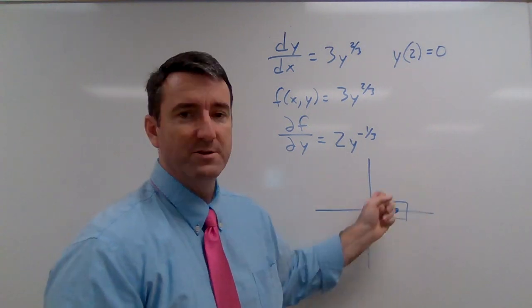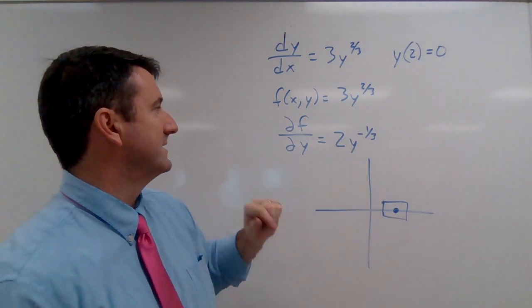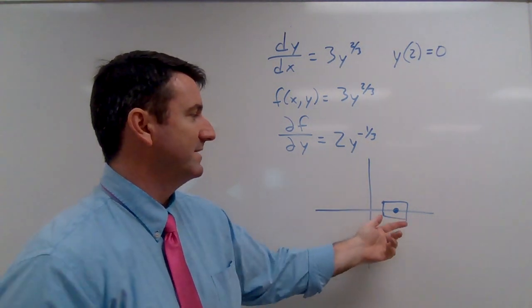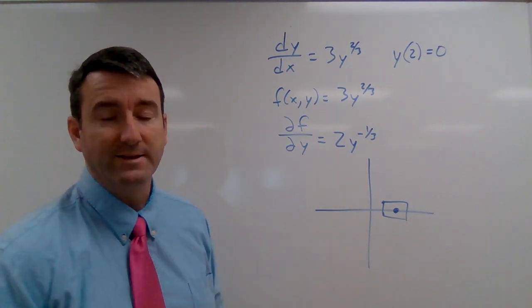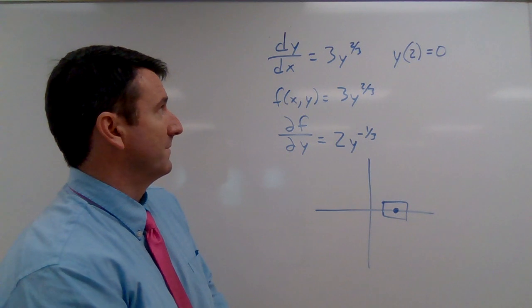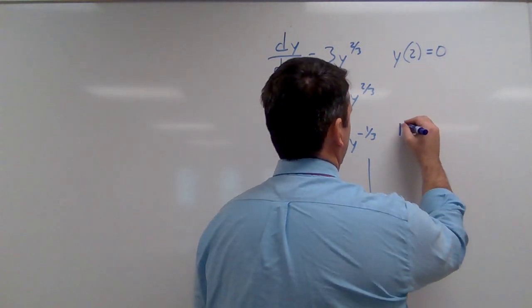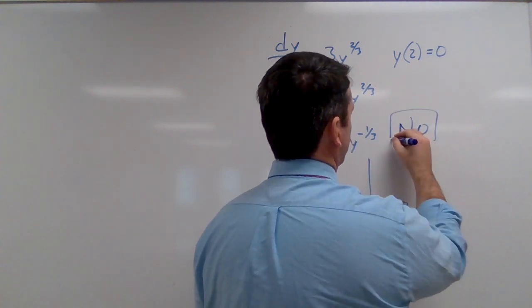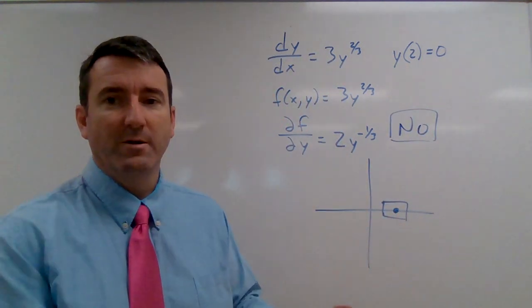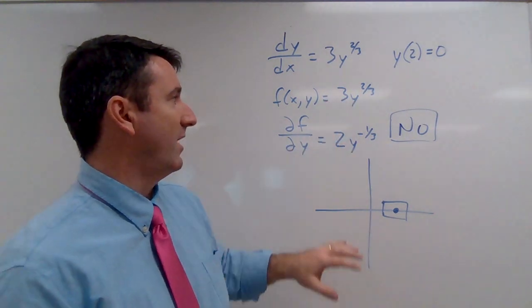So there's no way that we can draw a rectangle around that point where this is going to be continuous. Because obviously it's not continuous right at—it doesn't exist when y is equal to zero. So our answer here is going to be no. No, our theorem, theorem one does not imply a unique solution to this problem.